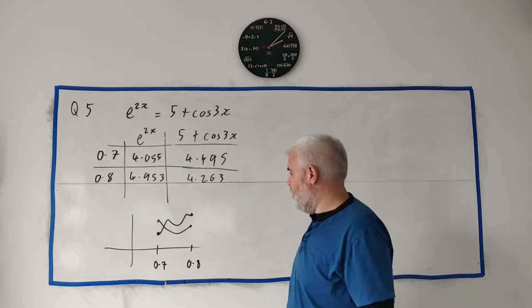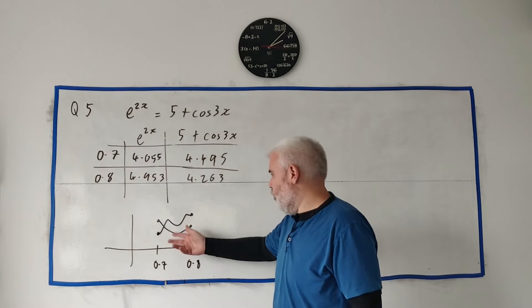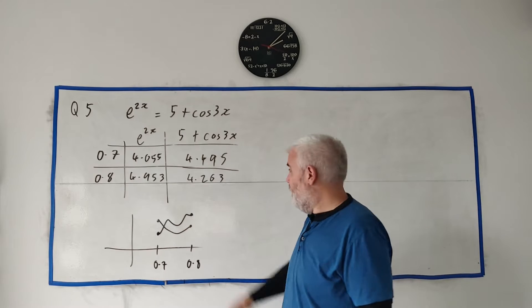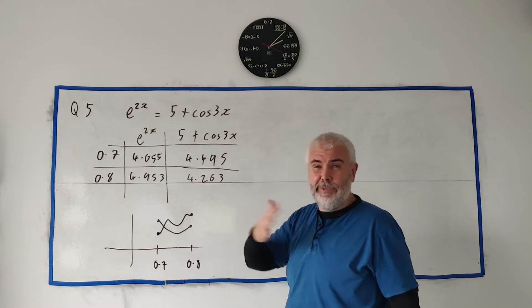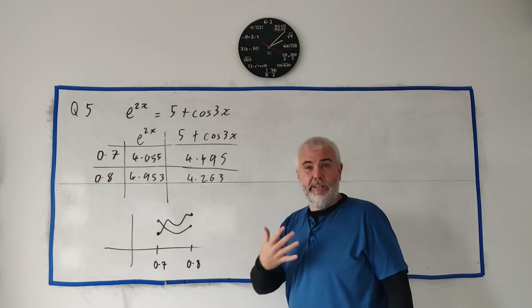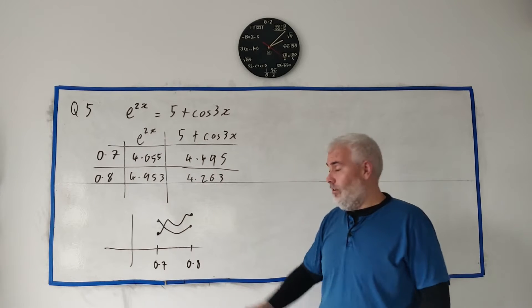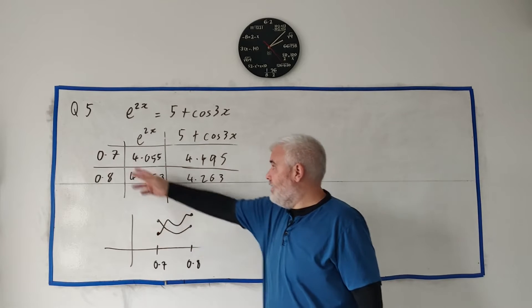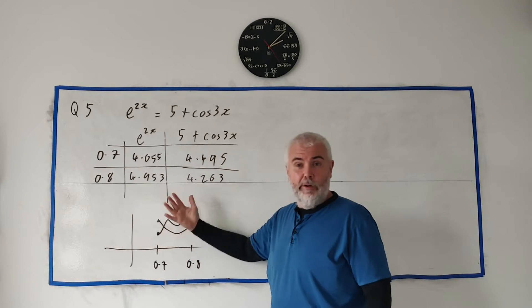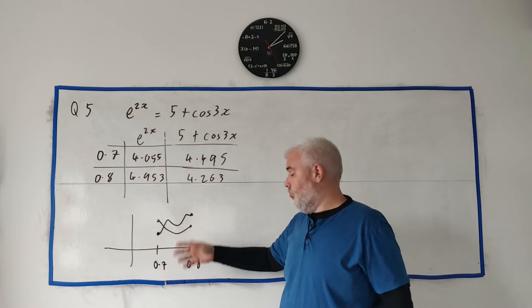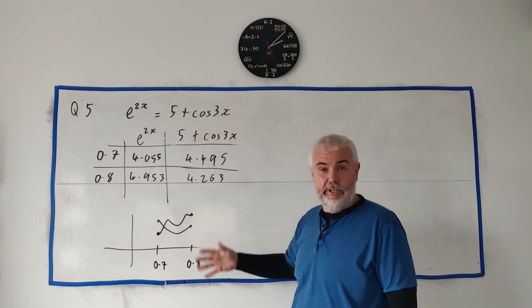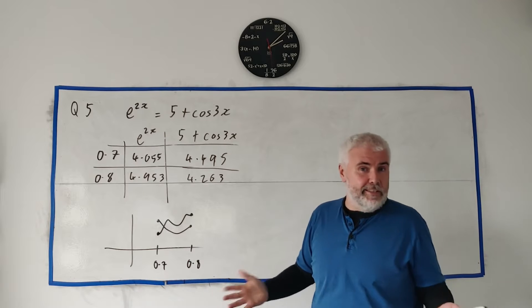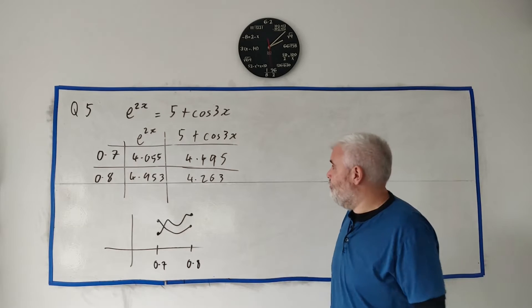That's all you have to do to answer this question. A drawing like this, with a bit of explanation — at 0.7 one curve is above the other, and at 0.8 the other way around — is enough.